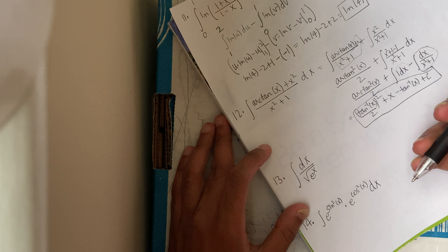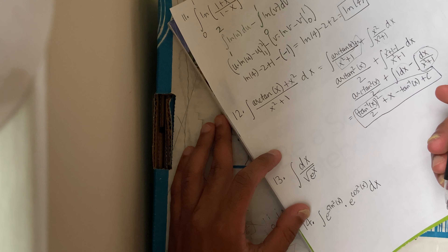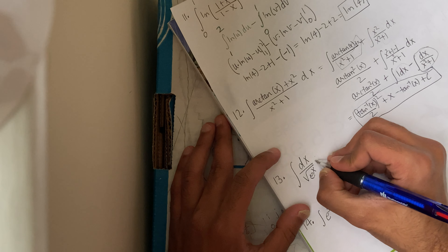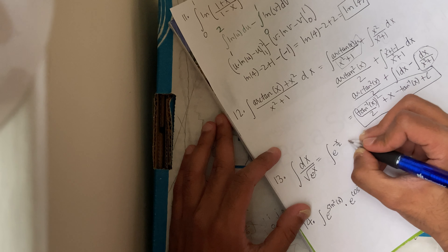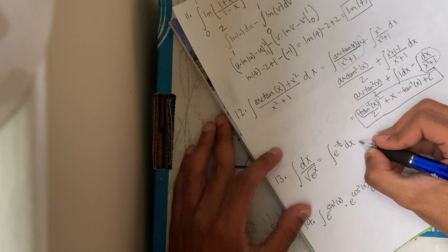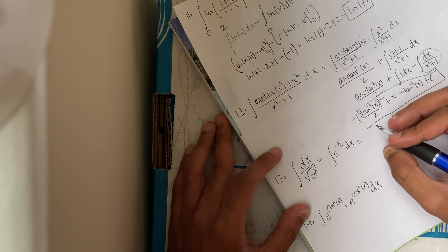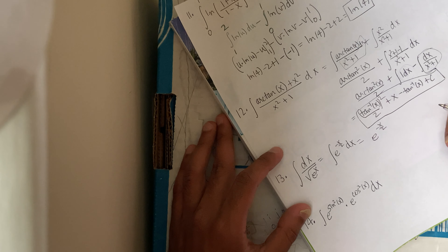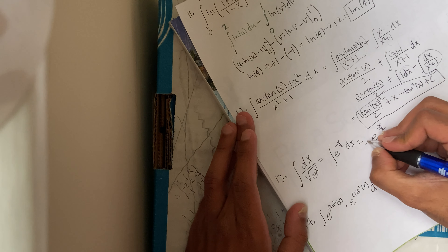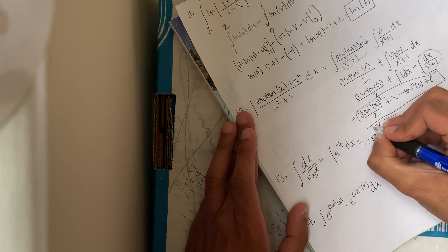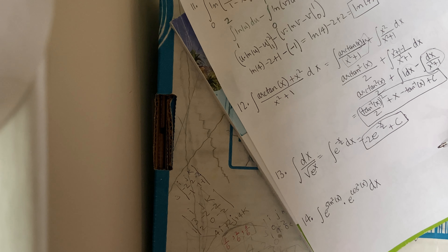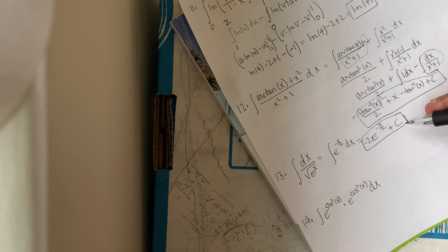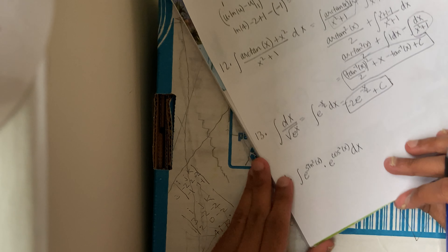Number 13: the integral of 1 over √(e^x) with respect to x. That can be redefined as e raised to negative x/2 dx. Integrating gives e raised to negative x/2, and since the chain rule contributes a negative 2, the answer is −2e^(−x/2) plus c. Differentiating that real quick gives e^(−x/2), which is 1 over the square root of e^x, confirming the answer.